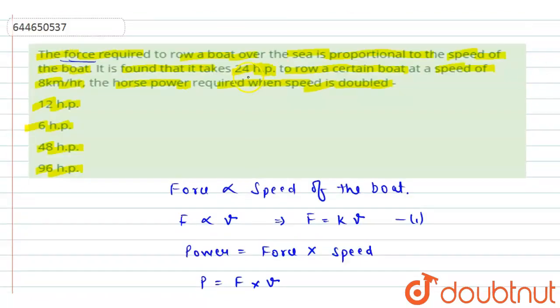Now we have two cases. In case one, when the speed is 8 kilometers per hour, the power given is 24 hp. In the second case, when the speed is doubled, we have to find how much hp is required for the boat.